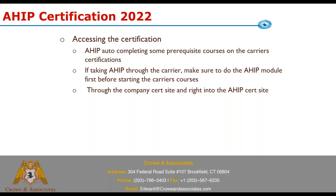AHIP will auto-complete some prerequisite courses for most carriers. If you access AHIP through United and take it, it will complete the prereq courses for you so you won't have to complete them. So if you're taking AHIP through a carrier, make sure you do the AHIP module first before you start the carrier certs. If you start taking the carrier certs first before you do AHIP or transmit it, they're going to make you do them — it'll waste time. For United especially, go right to AHIP first before you do anything else.